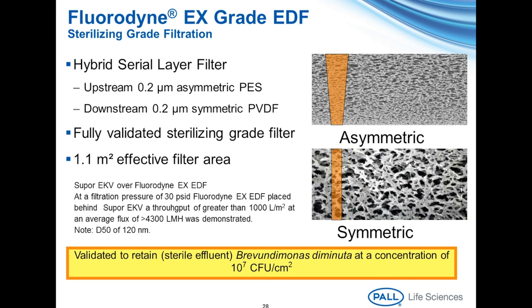An additional throughput and flux study was performed with SUPOR-EKV placed directly over Fluorodyne EX-EDF. At a filtration pressure of 30 PSID, Fluorodyne EX-EDF placed behind EKV generated a throughput of greater than 1,000 liters per meter squared at an average flux of 4,300 liters per meter squared per hour. This final test was done at a D50 of 120 nanometers, and having such high numbers shows that we have a very strong economic model with this filter.